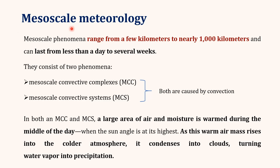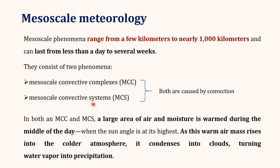Next is mesoscale meteorology. This is the study of phenomena which range from a few kilometers to nearly 1,000 kilometers and can last from less than a day to several weeks. Mesoscale phenomena are mainly of two types: mesoscale convective complexes and mesoscale convective systems.